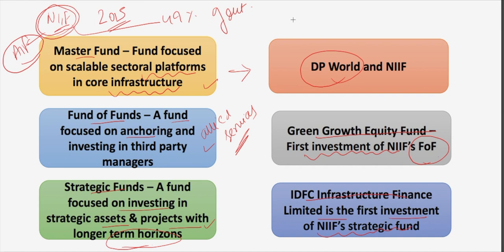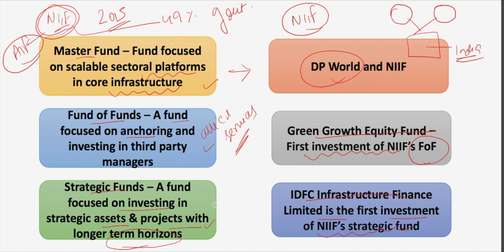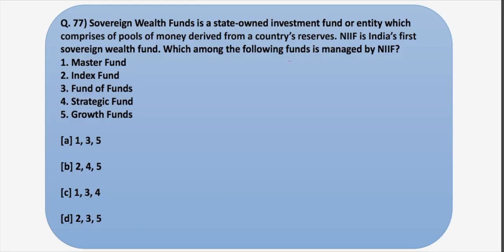The basic purpose of NIIF is that along with the government and some foreign investors, they invest in the infrastructure of India. These three funds — Master Fund, Fund of Funds, and Strategic Fund — are managed by NIIF. So the answer is option C, that is options 1, 3, and 4.